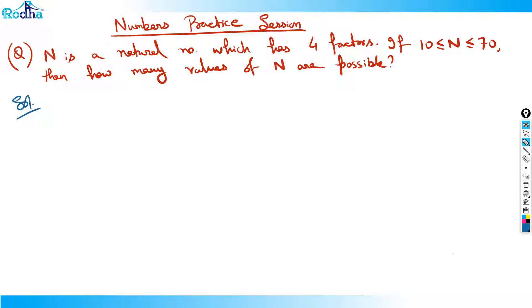This question says that N is a natural number which has 4 factors. We have studied this, that if N has got 4 factors actually, so N can be of the form P cube or N can be of the form P1 into P2. Basically, if I don't split N, it becomes 4. And if I split N as 2 into 2, so basically 2 prime numbers have 2 factors each. P1 has factor 2 so power 1, P2 has factor 2 so power 1. So ultimately 4 factors here.